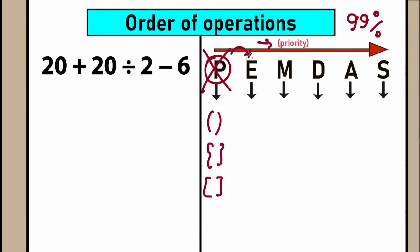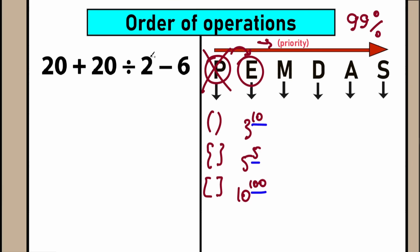The next step is E for exponents, meaning powers. For example, 3 to the power 10, 5 to the power 5, or 10 to the power 100. Let's scan our question — maybe we have powers like 2 squared or 20 to the power 3. We don't have any of those, so we can easily skip this part. We don't have any exponents.